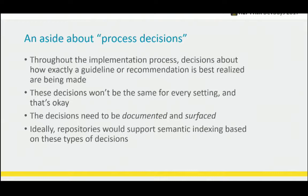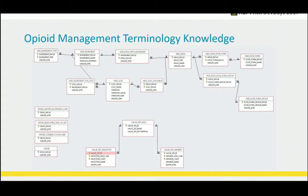It would be great if repositories actually supported semantic indexing based on those types of decisions, so you could dig around and see what artifacts were impacted by discussions around a particular topic. One of the hardest parts is figuring out the strength of each component ingredient of a medication. This is the OMTK — opioid management terminology knowledge — which the University of Utah produced from RxNorm: a representation of all the data involved in getting from a prescription RxNorm code to the set of ingredients and components with their associated strengths to do the MME calculation.